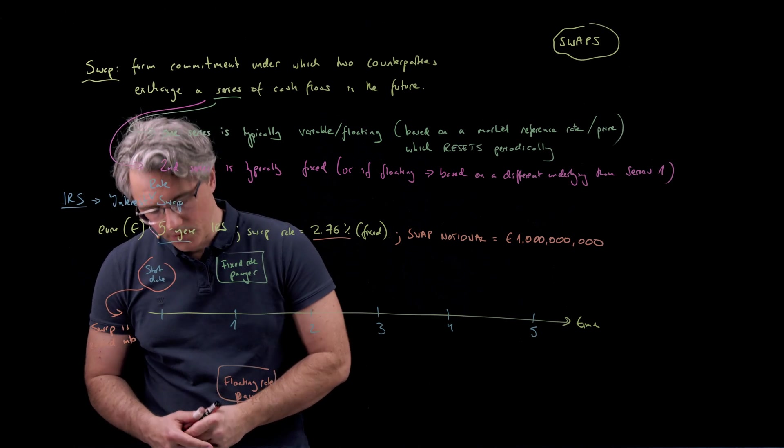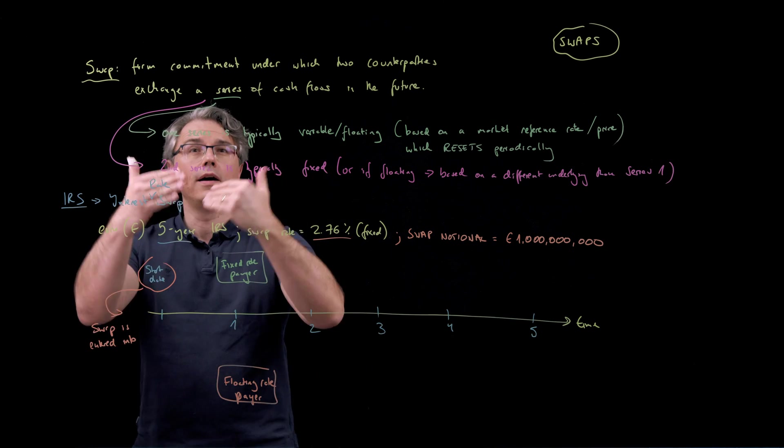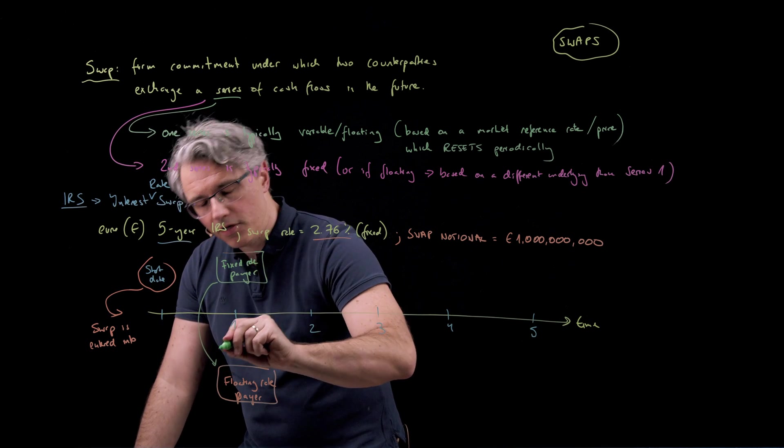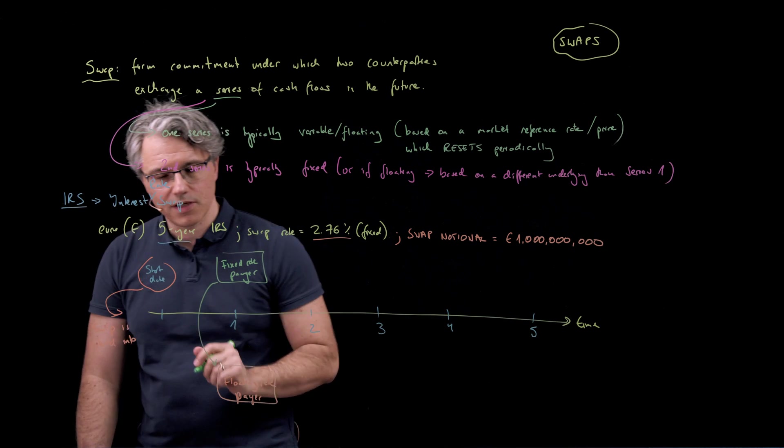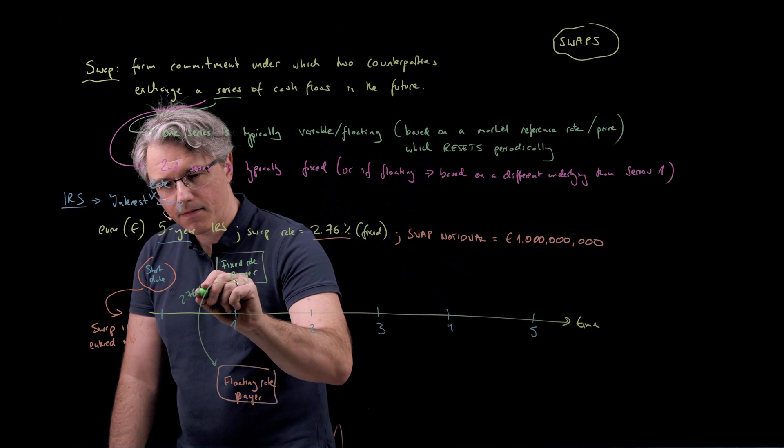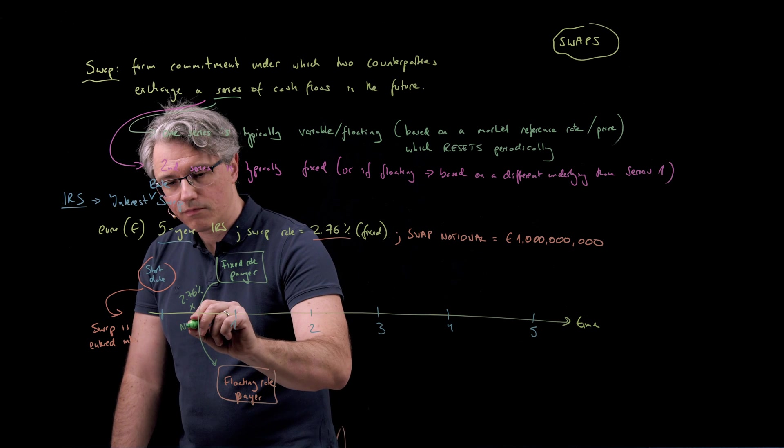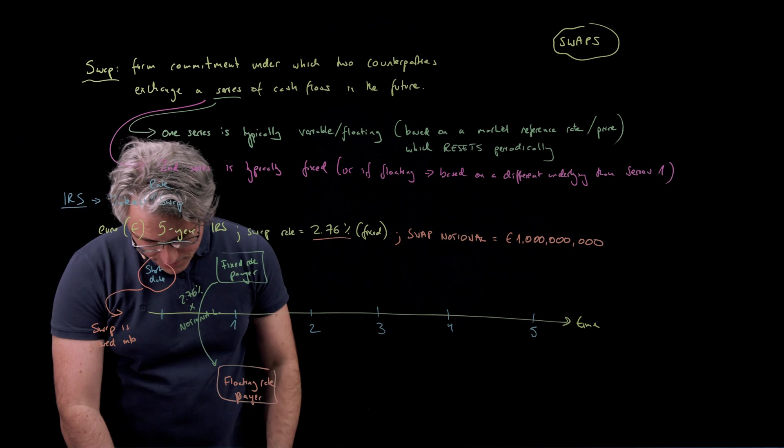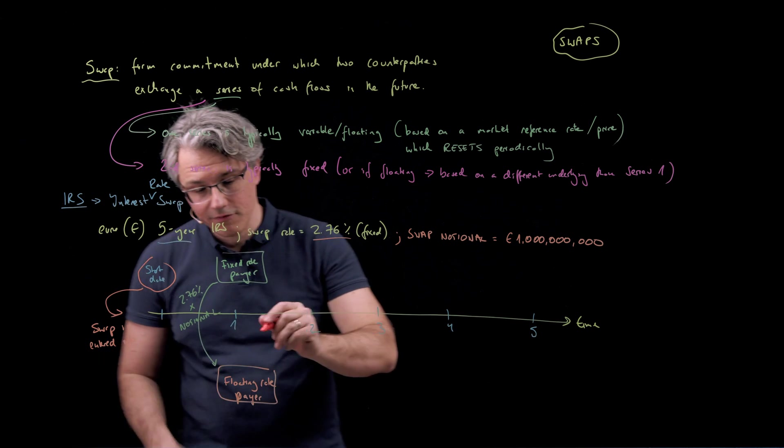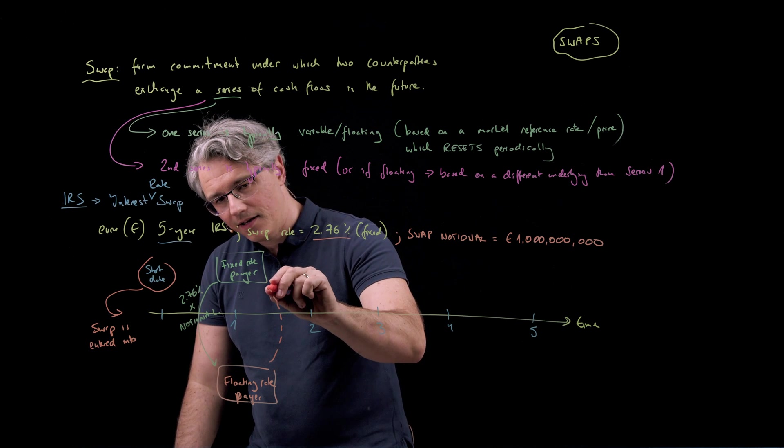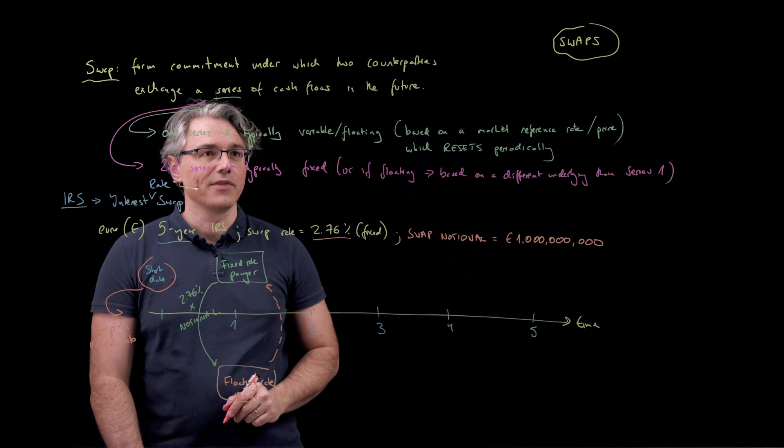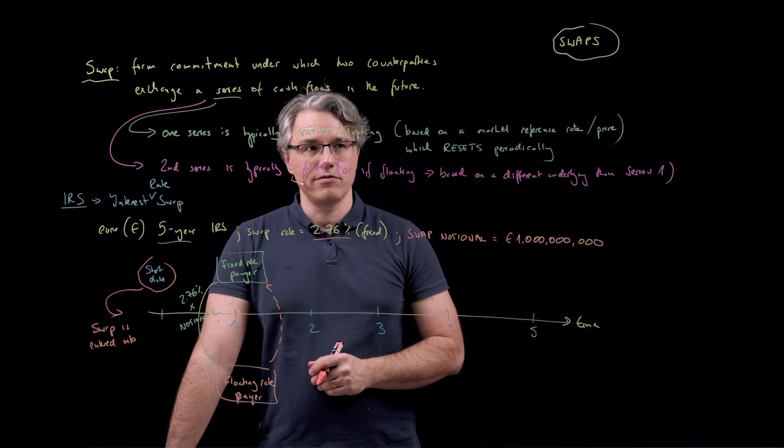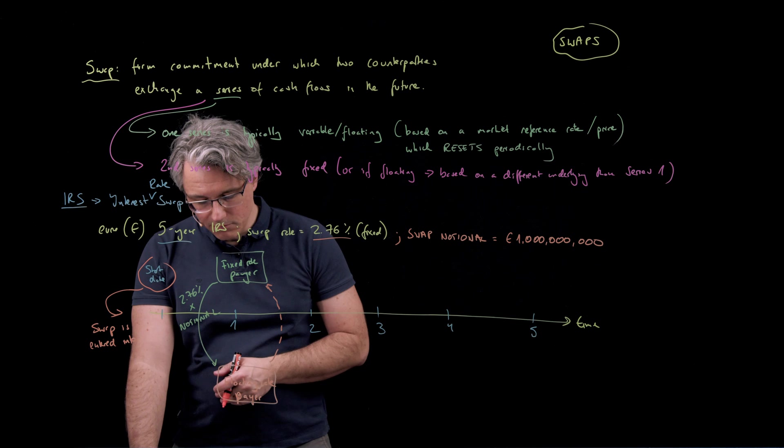So what they will do on these dates is exchange cash flow series. The fixed rate payer will pay whatever was pre-agreed up front, which was that fixed rate of 2.76% times the contract notional, which is 1 billion euros. In return, what they will receive, because the floating rate payer will be paying this, is that other series which is actually the floating one, which is based on the market reference rate and it resets periodically, so here it will reset once a year.